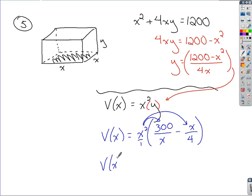So my function for V(x), it's going to be x squared times 300 all over x, right? So the x squared and the x will cancel. I'll be left with 300x. Minus, you've got x squared times x over here, so x cubed all over 4. So I could write x cubed over 4 or I could understand that that's just 1 fourth of x cubed. Why do I like to bring that down?